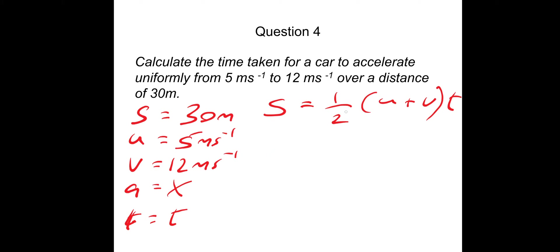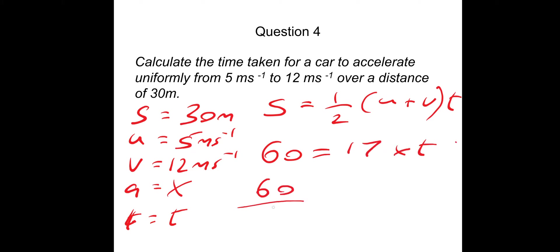Putting the numbers in: S is 30, multiplied by 2 gives 60, equals U plus V which is 17, times T. So time simply equals 60 divided by 17, which is 3.5 seconds.